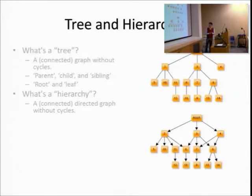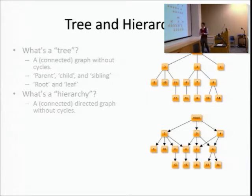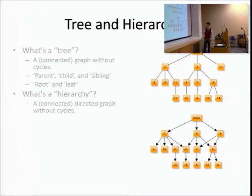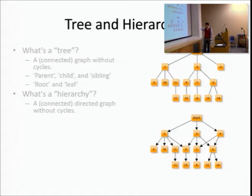A hierarchy looks quite similar to a tree, but there's something slightly different. For example, node 7 here actually has two parents - both node 3 and node 4. That can only happen in hierarchies; in a tree, a node cannot have more than one parent. Even though it's a directed graph with multiple parents, it doesn't have a cycle.